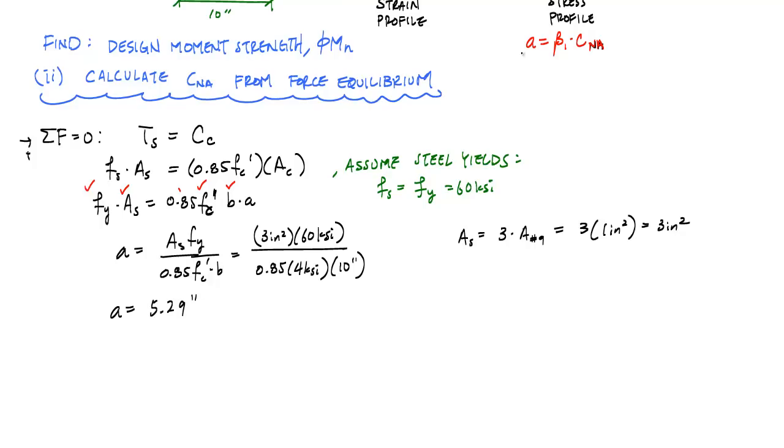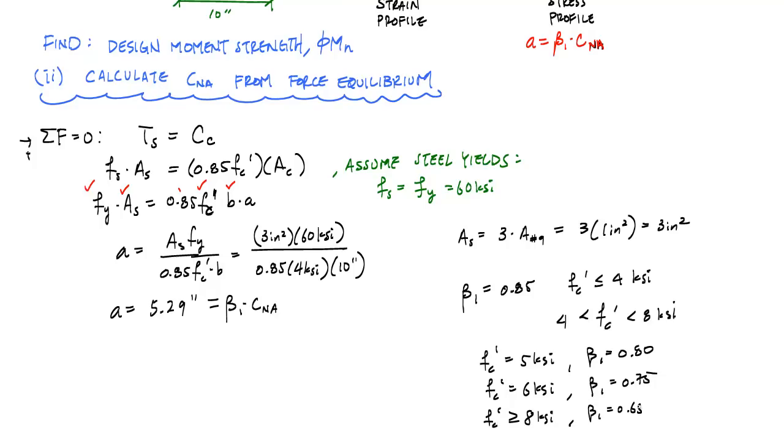Now using the definition of the depth A of the equivalent stress block or the Whitney stress block here, which is this is equal to beta one times CNA, I can solve for CNA. The thing to know is that beta one is a parameter that depends on the ultimate compressive strength of concrete or FC prime. In general, beta one is equal to 0.85 when FC prime is less than or equal to 4 KSI. Between 4 and 8 KSI, for every 1 KSI, you have to subtract out 0.05 for the beta one. Anytime you have FC prime greater than or equal to 8 KSI, then beta one is 0.65.